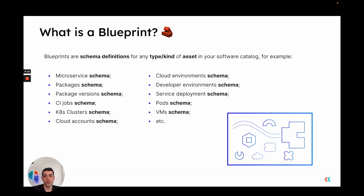For example, you can have a blueprint for microservices, packages, package versions, CI jobs, Kubernetes clusters, and more. Any asset that you want to define and configure in your software catalog can be represented using a blueprint.